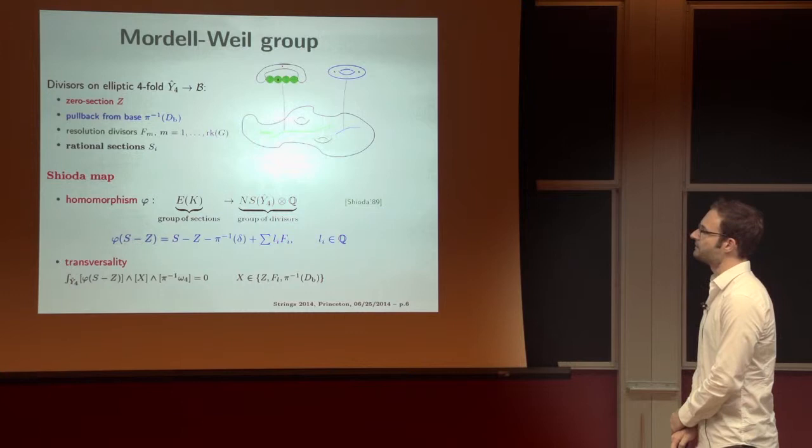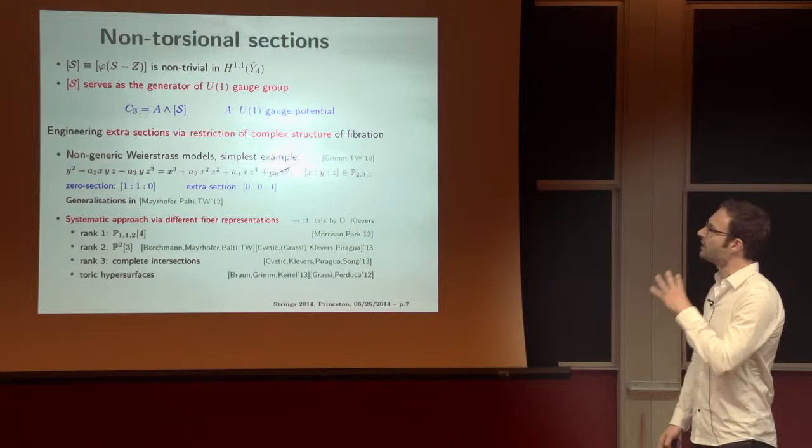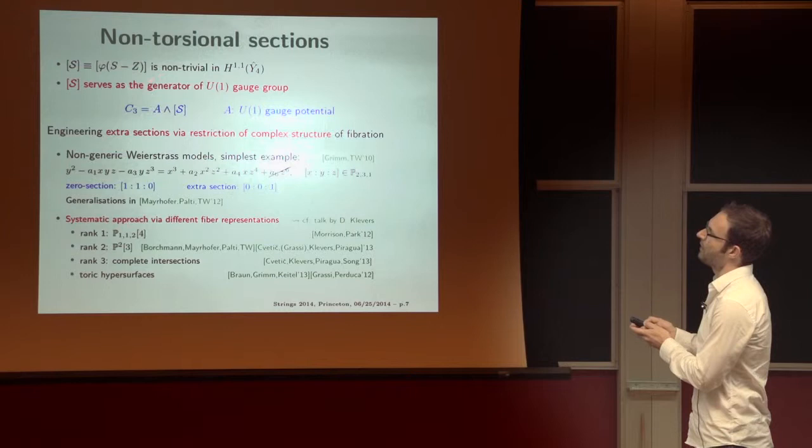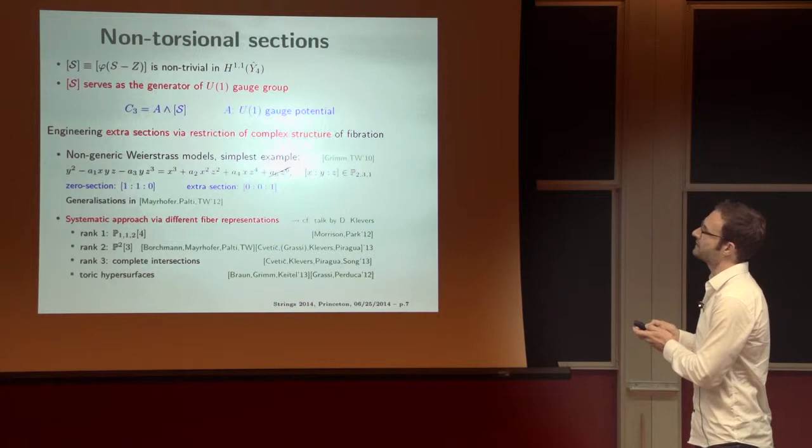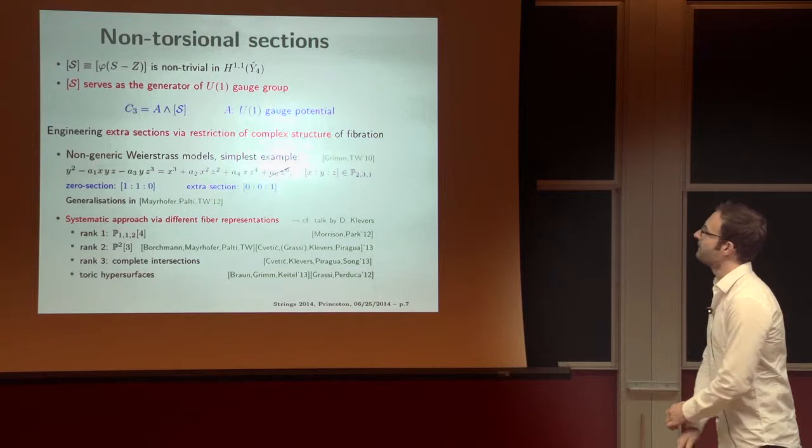Okay. So why is this important? Why is it particularly transversality important? First, because this gives the connection between the non-torsional sections and the U(1)s. Indeed, by the Shioda map, we now have a type of divisor. It is non-trivial for the non-torsional sections in cohomology or in homology. And therefore, it serves as the generator of the U(1) gauge group. By F-M theory, in reality, we can expand the three-form in terms of divisors. If we get a one-form potential, which then is the one-form, as was also reviewed very nicely by Dennis before the break.